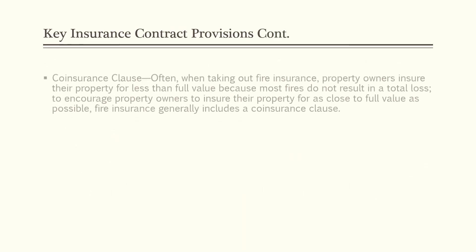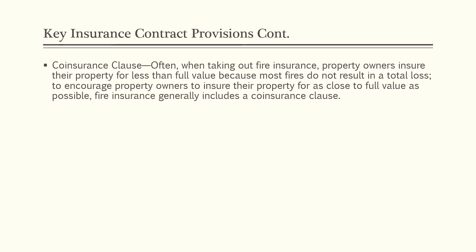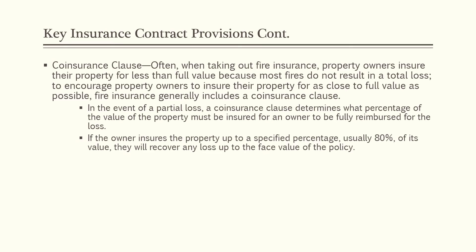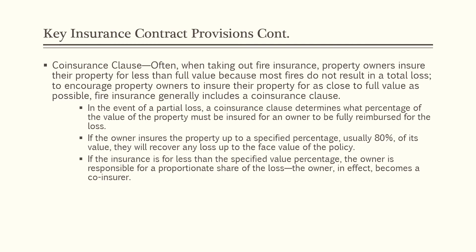The next key insurance contract provision is the co-insurance clause. Often, when taking out fire insurance, property owners insure their property for less than full value because most fires do not result in a total loss. To encourage property owners to insure their property for as close to full value as possible, fire insurance generally includes a co-insurance clause. In the event of a partial loss due to fire, the co-insurance clause determines what percentage of the value of the property must be insured for an owner to be fully reimbursed. If the owner insures the property up to a specified percentage, usually 80% of its value, they will recover any loss up to the face value of the policy. If insured for less than that percentage, the owner is responsible for a proportionate share of the loss — the owner becomes a co-insurer.